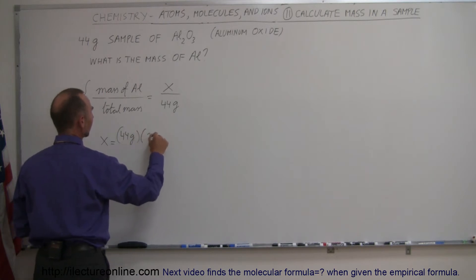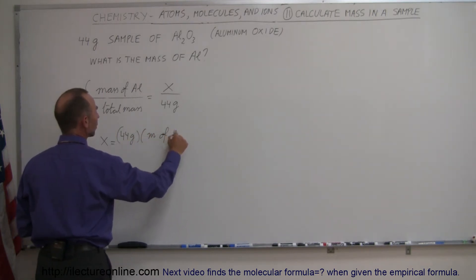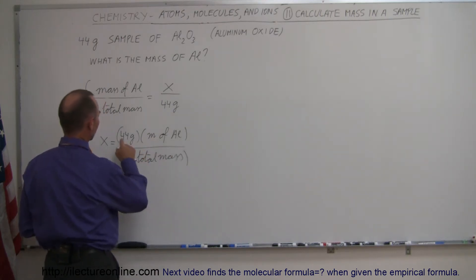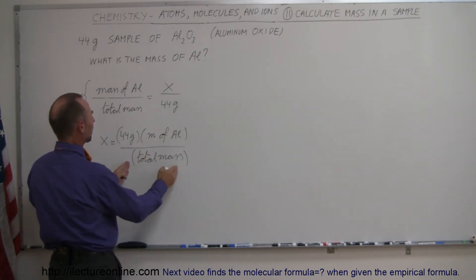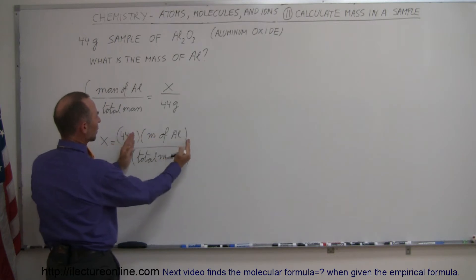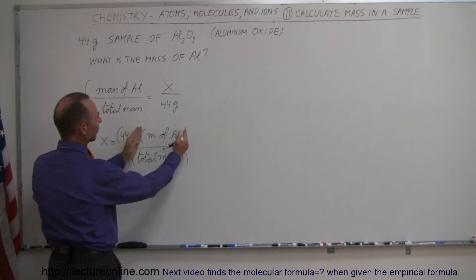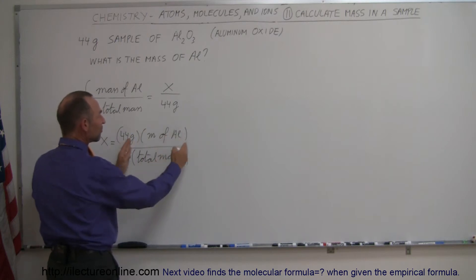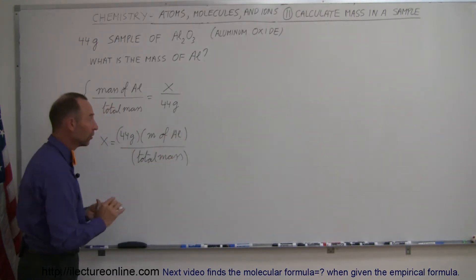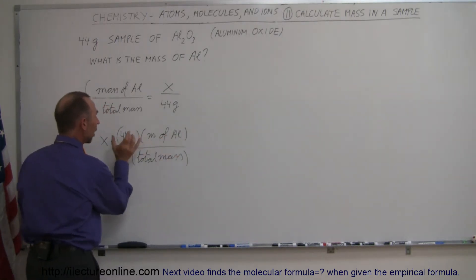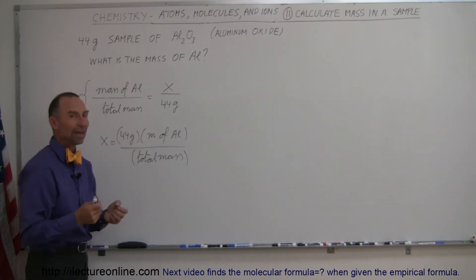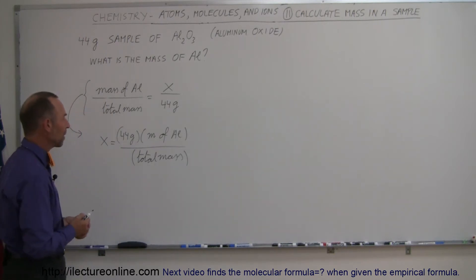X is equal to 44 grams times the mass of the aluminum divided by the total mass. This quantity right here is actually a ratio — the mass of aluminum is going to be less than the total mass, so this divided by that is going to be a fraction less than 1. That's going to be a fraction of the total 44 grams, which is represented as X, the mass of the aluminum.